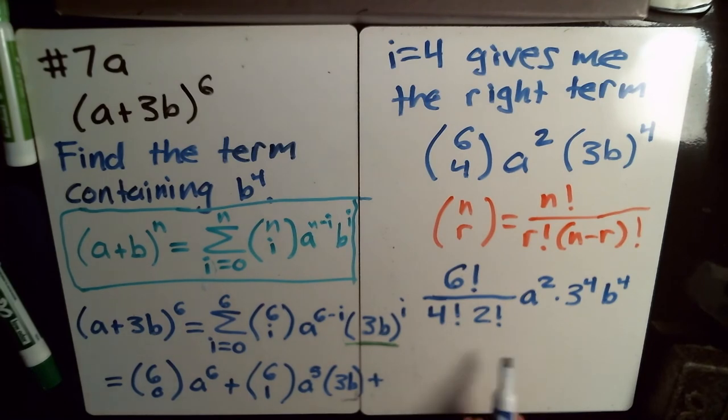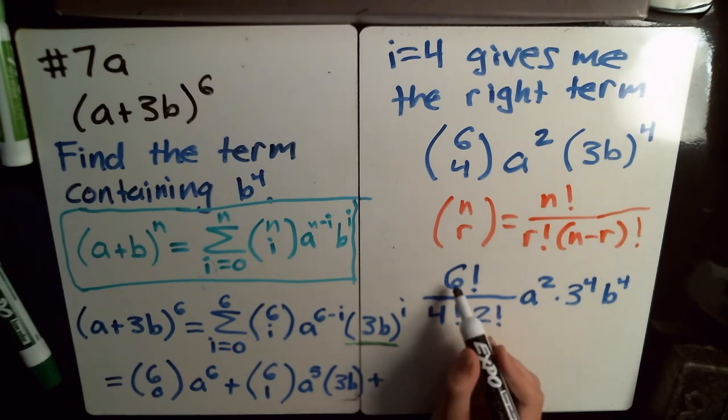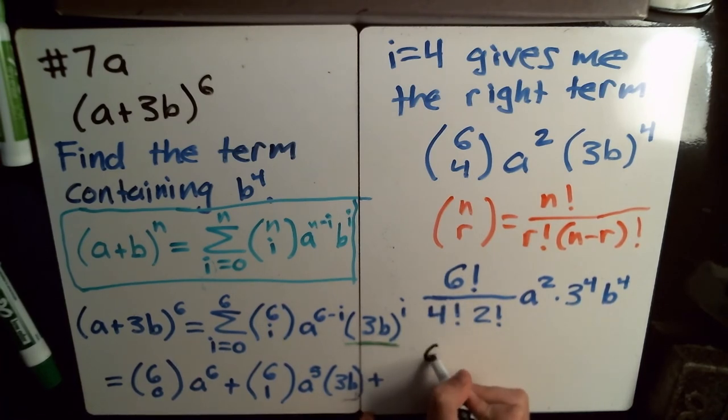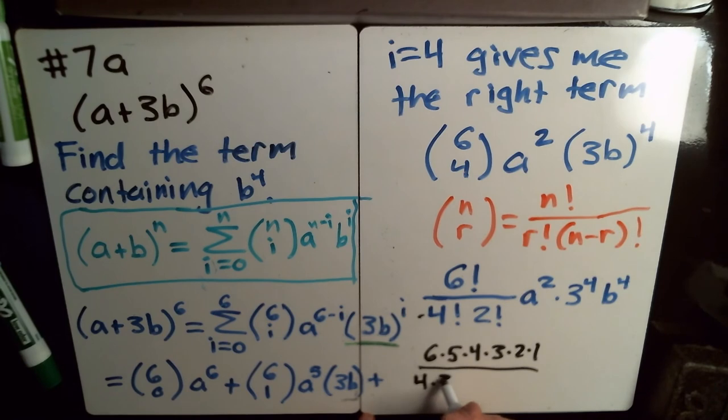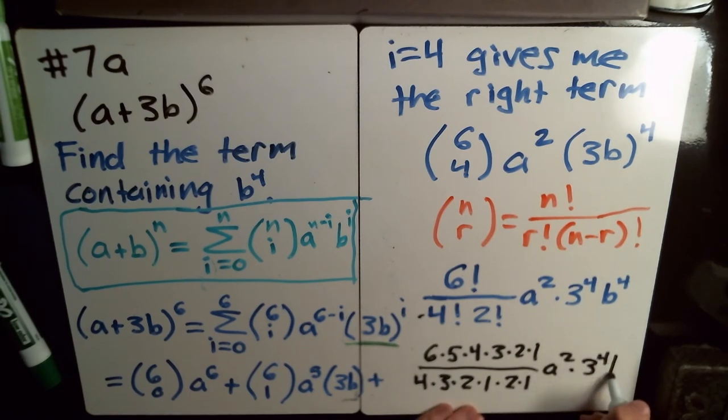And then we just simplify this. Well, you do have to remember what a factorial does. And a factorial times all the numbers smaller than this number. So in this case, 6 factorial is 6 times 5 times 4 times 3 times 2 times 1. 4 factorial is 4 times 3 times 2 times 1. And then 2 factorial is just 2 times 1. So we've got, and then a squared, 3 to the 4th, and b to the 4th.